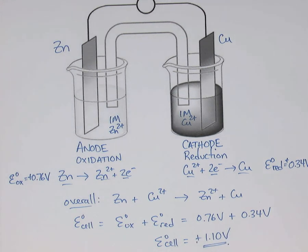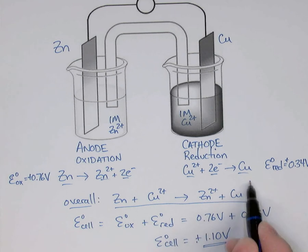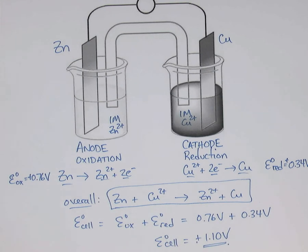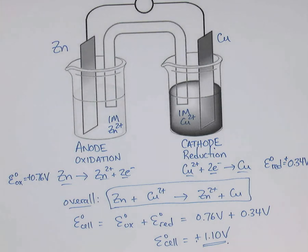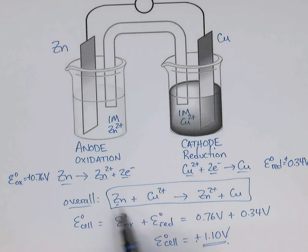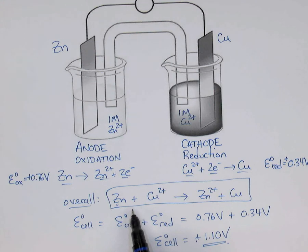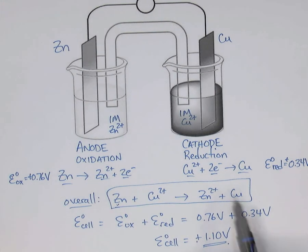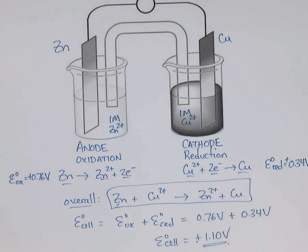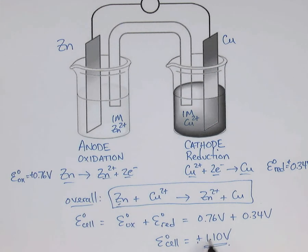A positive cell potential means this overall reaction is a spontaneous redox reaction, and that means its equilibrium constant Kc is very large. So if you put a piece of zinc metal directly into a copper 2+ solution, this reaction is going to happen completely — one of the two reactants will get used up. You will definitely see a reaction. On the other hand, the reverse reaction — putting copper metal into a zinc solution — would have a cell potential of negative 1.10 volts, making it a non-spontaneous process with no visible reaction.